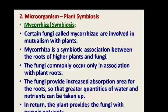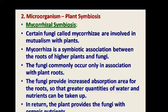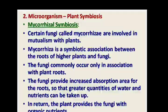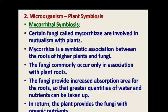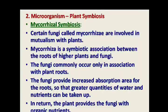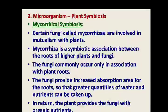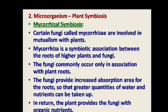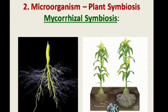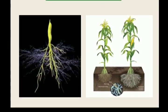Mycorrhizal symbiosis is another example of symbiotic association between microorganism and plant. Certain fungi, called mycorrhiza, are involved in mutualism with plants. The fungi commonly occur only in association with plant roots, providing and increasing the absorption area for the root so that greater quantities of water and nutrients can be taken up by the plants. In return, the plant provides organic nutrients to the fungi. In this figure, you can observe how the root area is expanded due to the presence of mycorrhizal fungi.